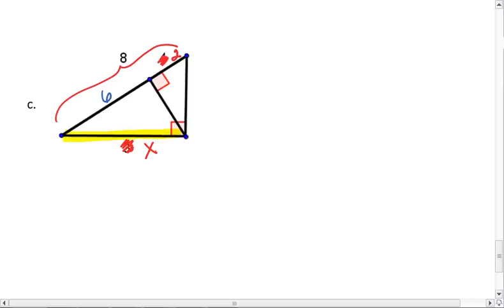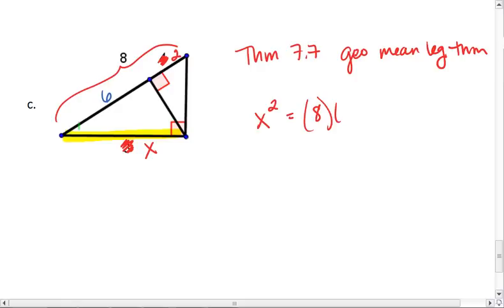This is theorem 7.7, the geo mean leg theorem. So our leg squared is going to equal the entire hypotenuse multiplied by the part of the hypotenuse that is closest or shares the vertex with that leg. x squared equals 8 times 6, giving us x squared equals 48, x equals the square root of 48, which is going to be approximately 6.93 if we round properly.